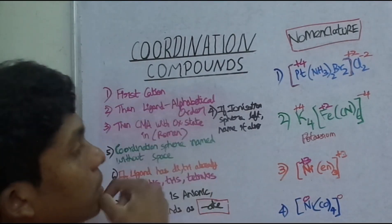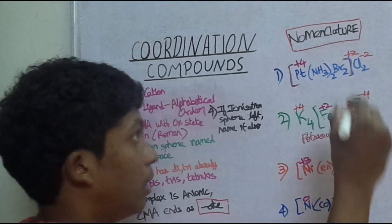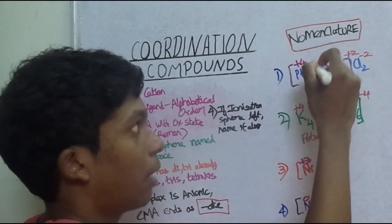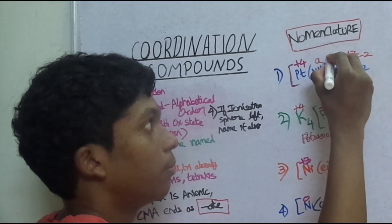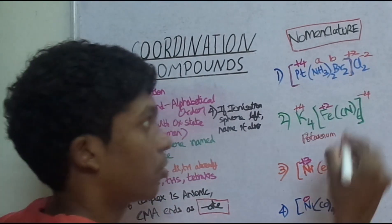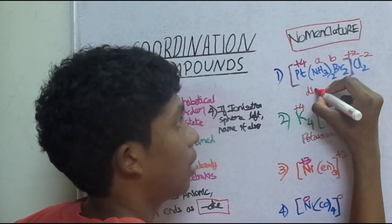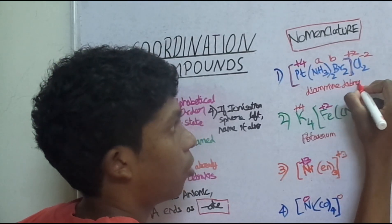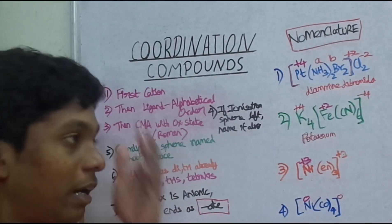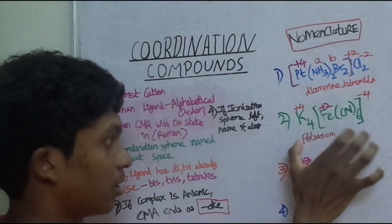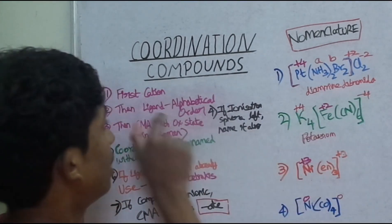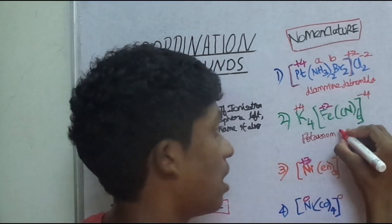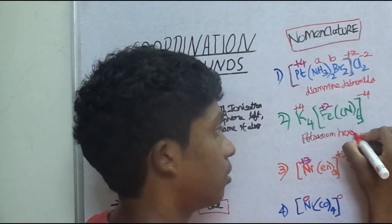Now, step 2: name the ligands in alphabetical order. The ligands here are: the amine group — amine starts with A — and the bromido group — bromido starts with B. A comes first. So we write: diamine, dibromido. The ligands are named in alphabetical order, and we have the brackets.